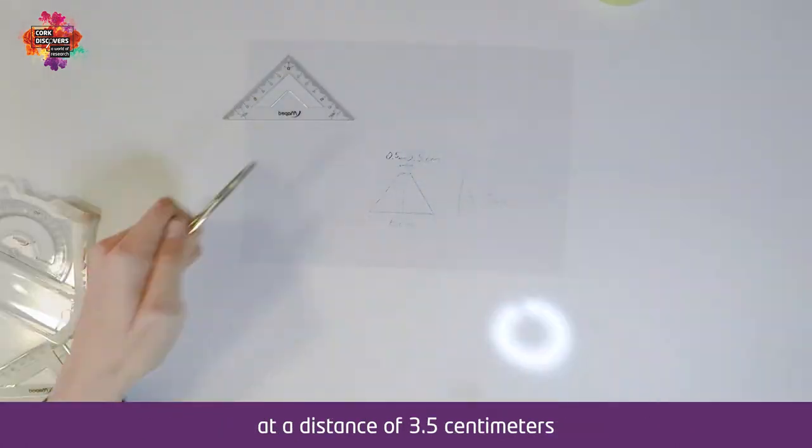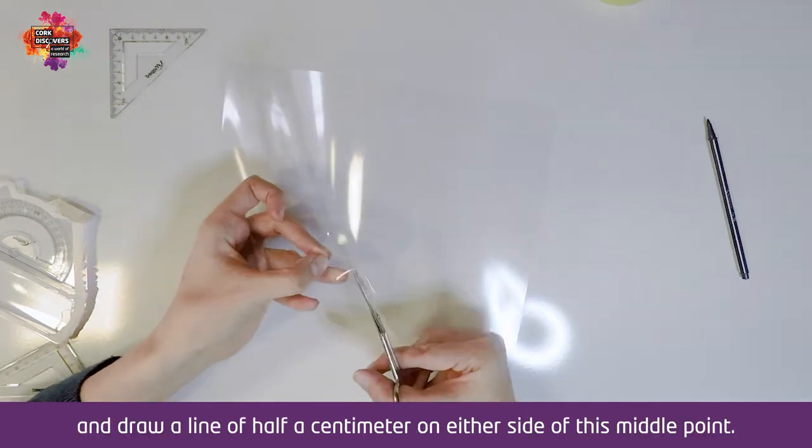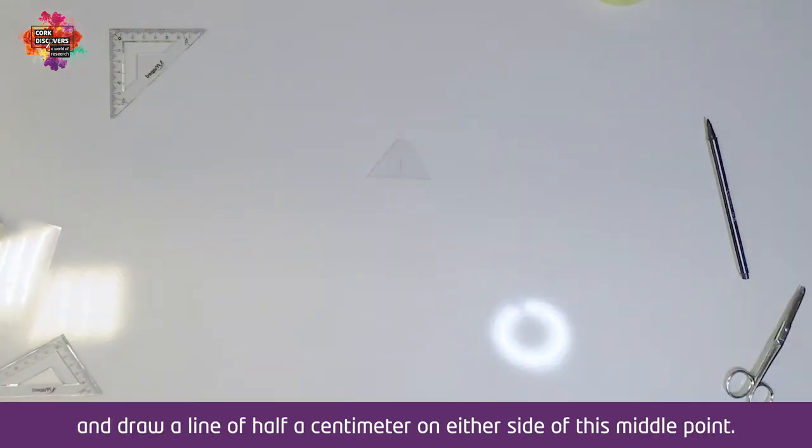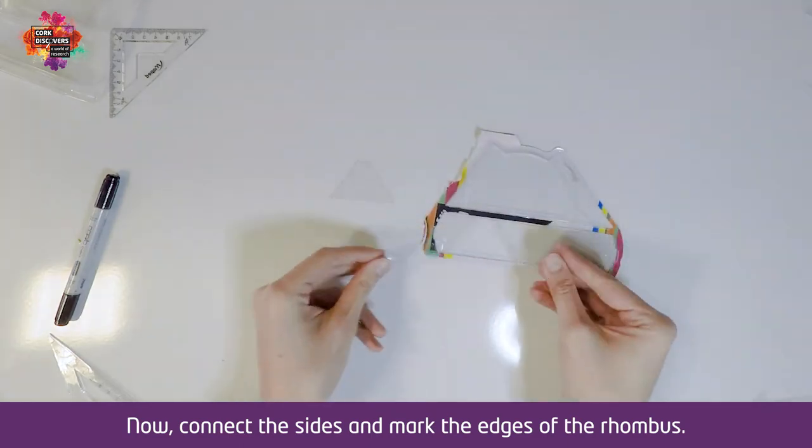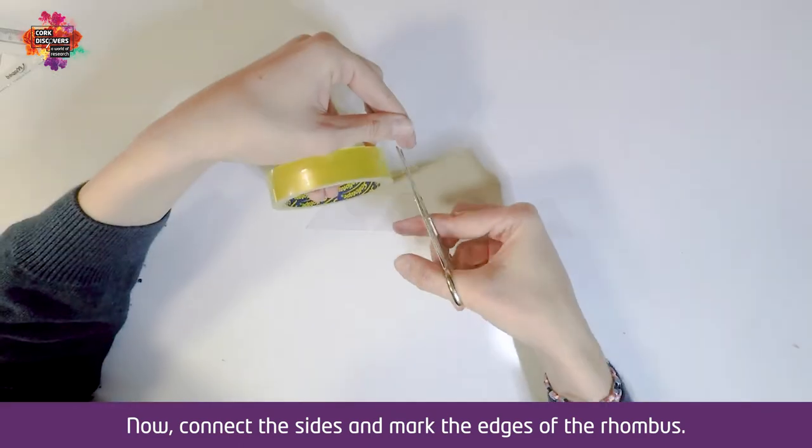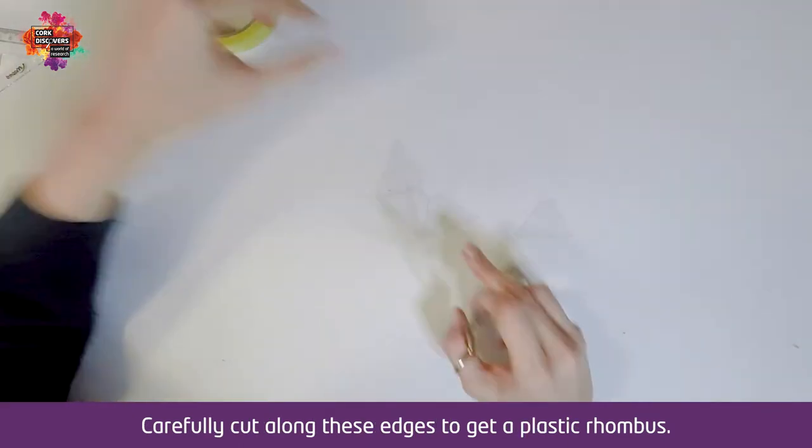And draw a line of half a centimeter on either side of this middle point. Now connect the sides and mark the edges of the rhombus. Carefully cut along these edges to get a plastic rhombus.